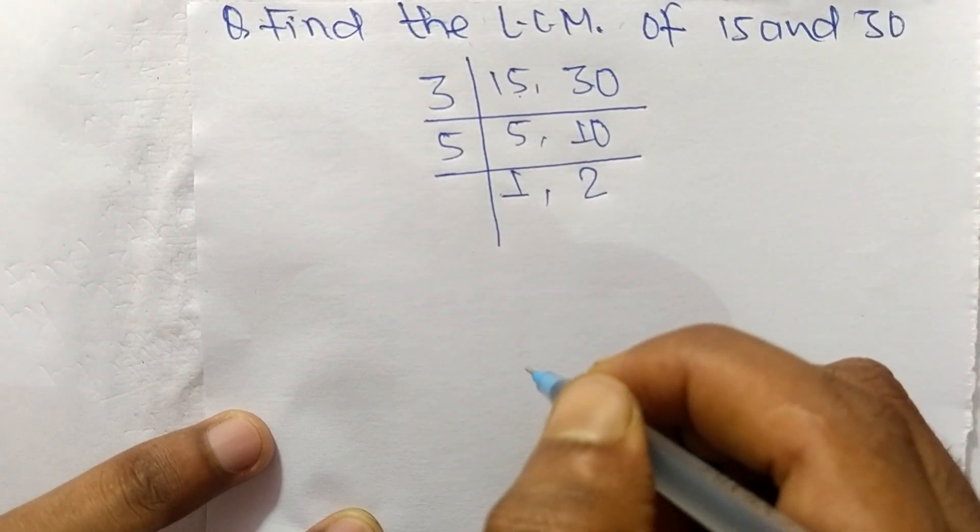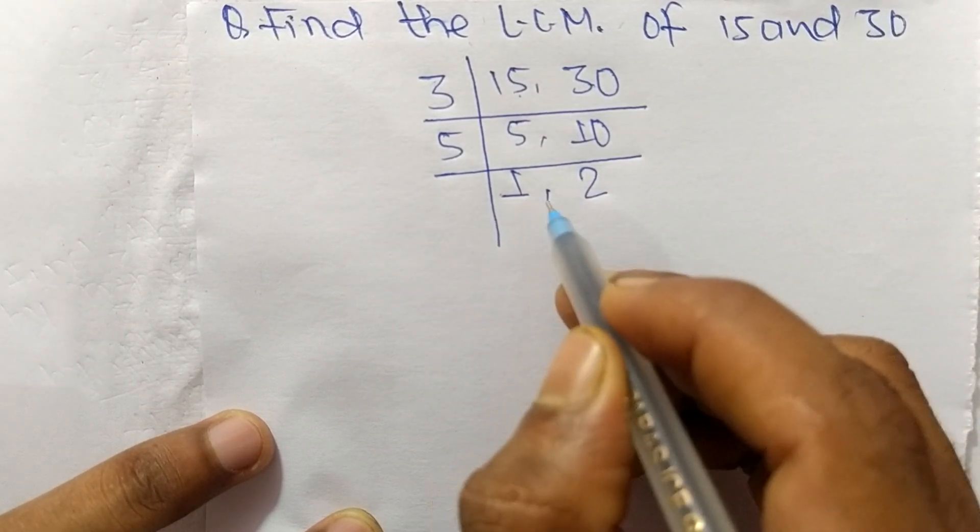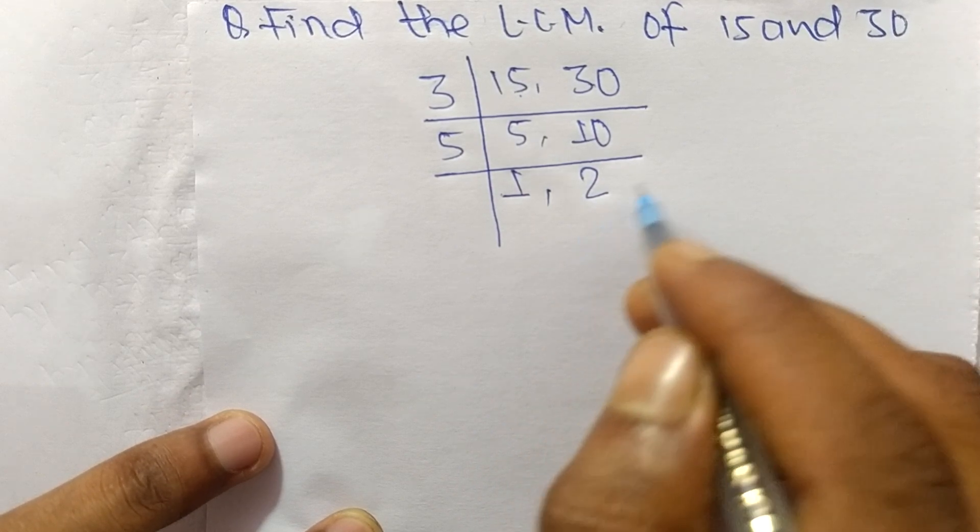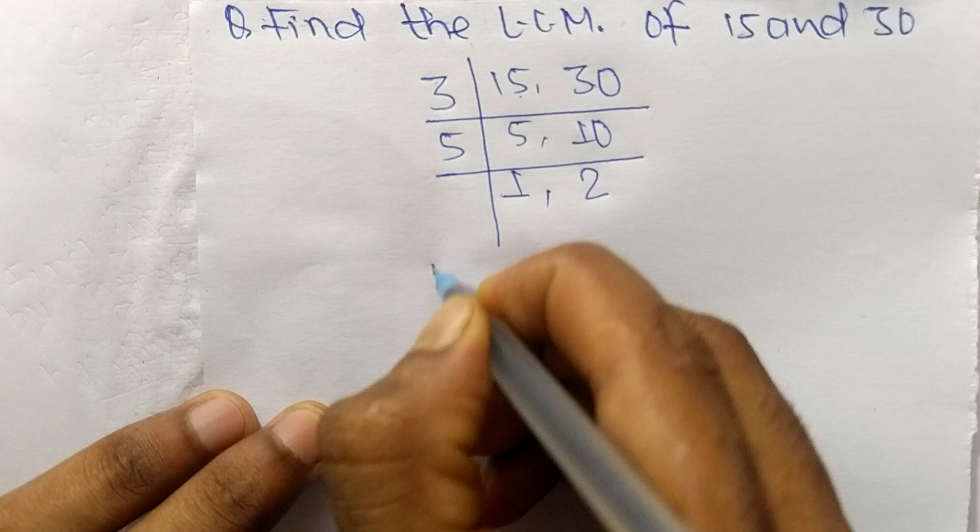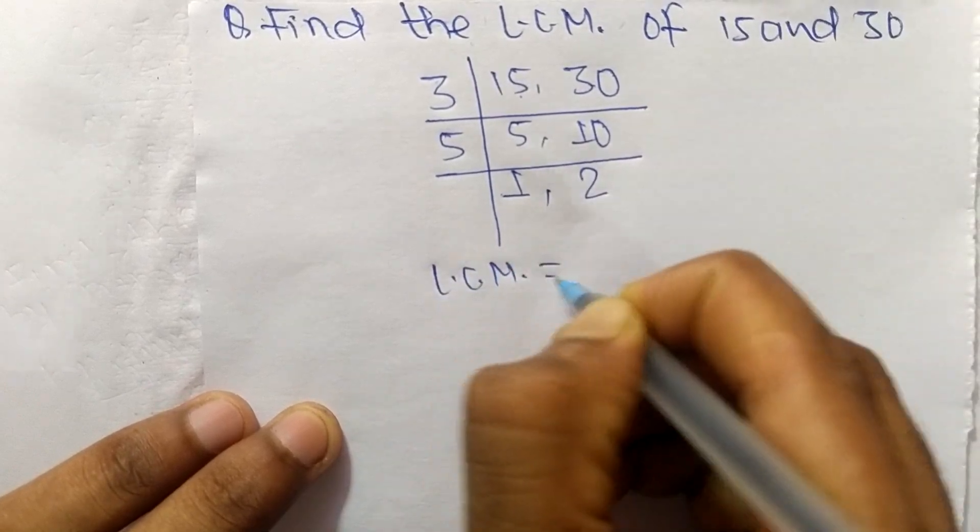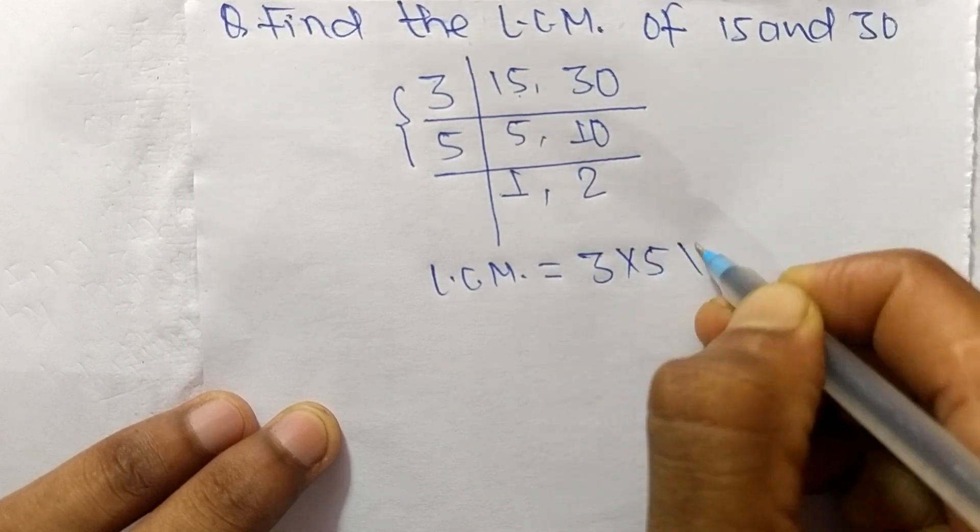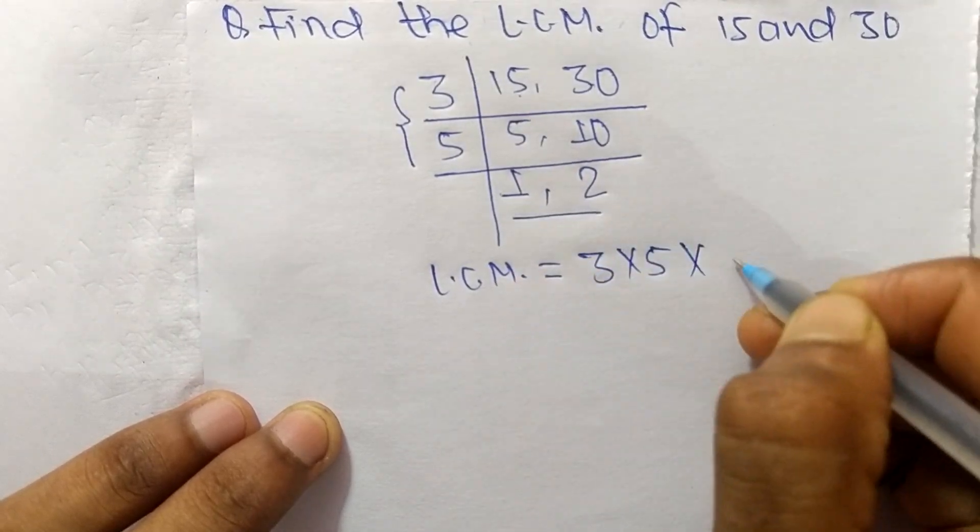Now we have 1 and 2, which are not exactly divisible by the same number. So the LCM is equal to 3 times 5 from this part, and from this part it is 2.